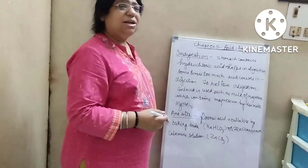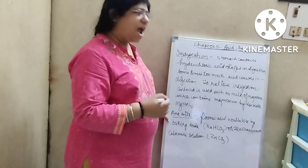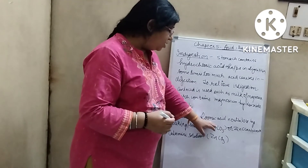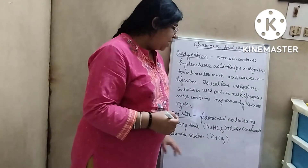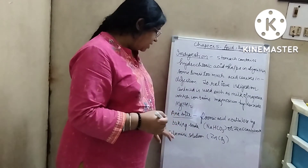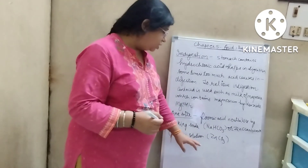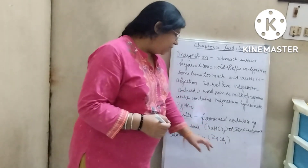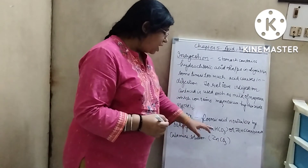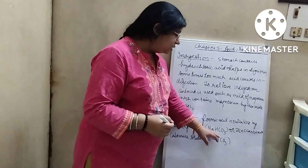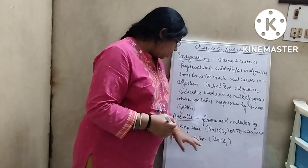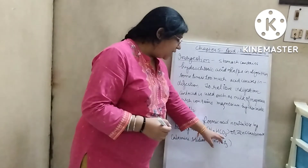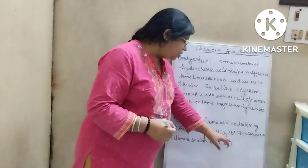When an ant bites you, it releases formic acid. It is neutralized by the calamine solution which contains zinc carbonate, or baking soda, that is NaHCO₃.